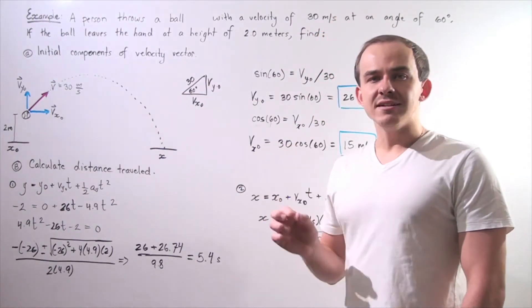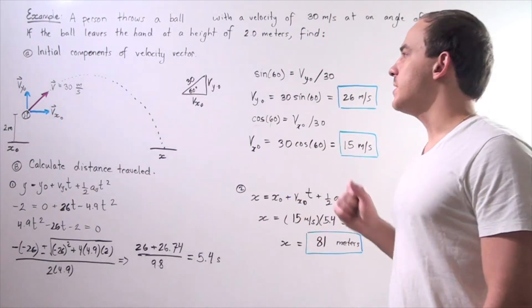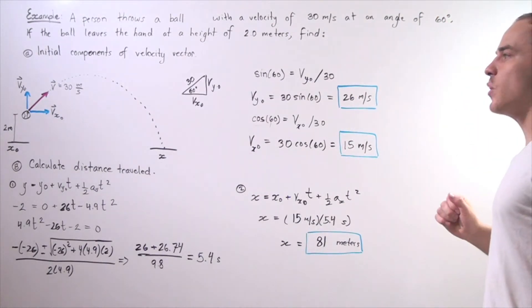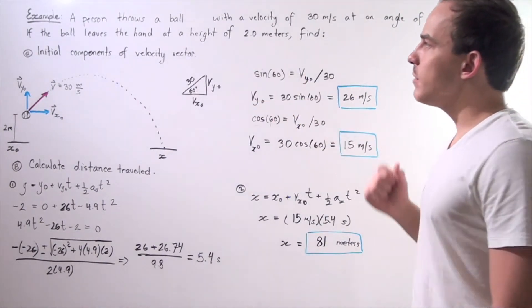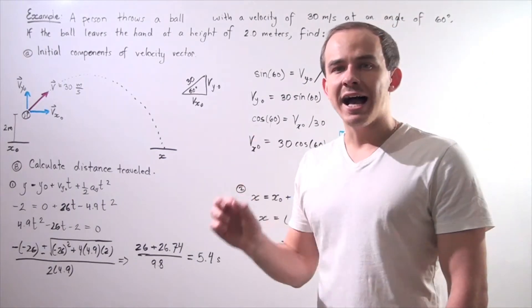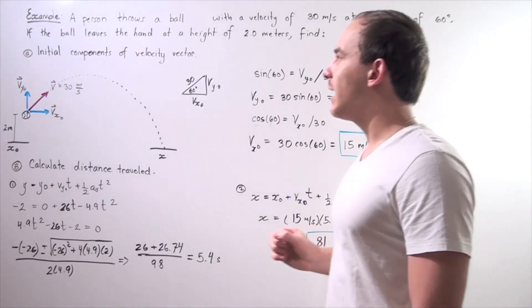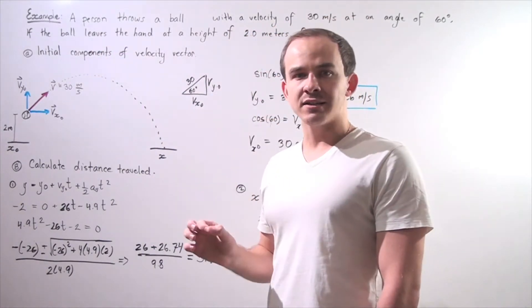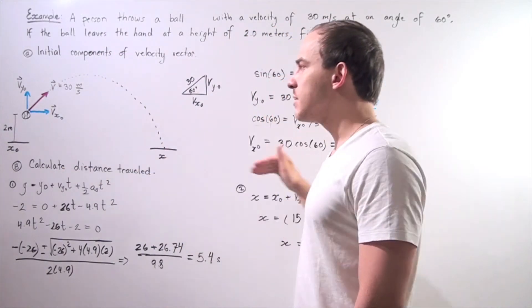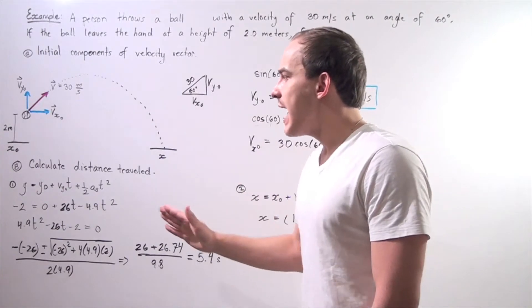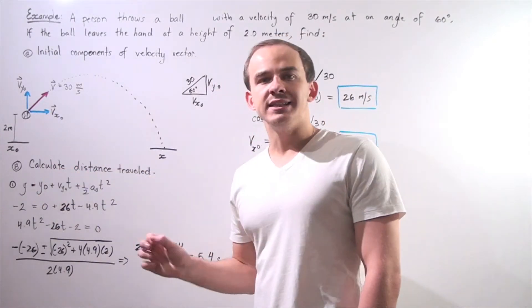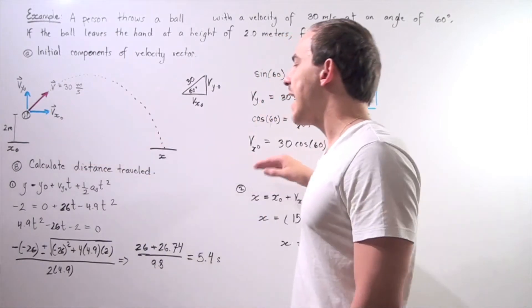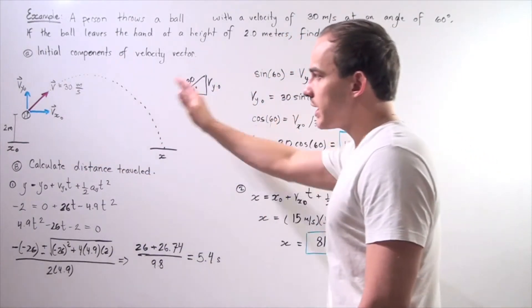A person throws a ball with a velocity of 30 meters per second at an angle of 60 degrees with respect to our x-axis. If the ball leaves the hand at a height of 2 meters, find A, the initial components of the velocity vector — so we're looking for our x-component and y-component — and B, we want to calculate the distance our ball travels along our x-axis. Let's look at our diagram.